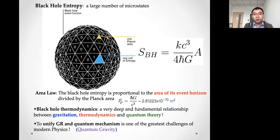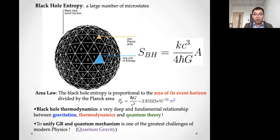For a stellar mass black hole this is a huge number. The black hole thermodynamics, and in particular the area law of the entropy, indicate a very deep and fundamental relationship between gravitation, thermodynamics, and quantum theory. Unifying general relativity and quantum mechanics is still one of the biggest challenges of modern physics. We want a theory of quantum gravity to understand the nature of gravity, spacetime, and our universe.